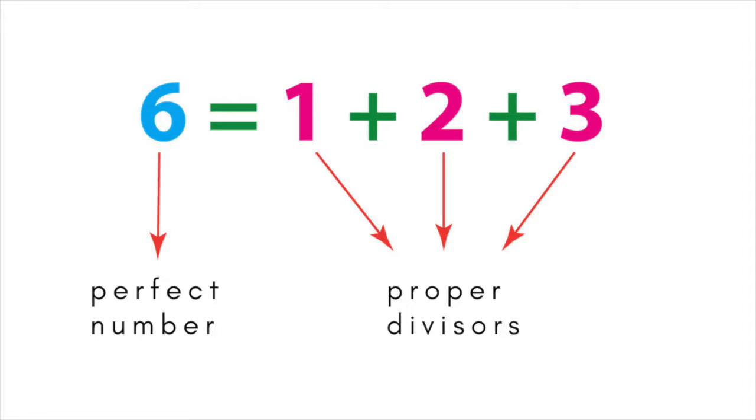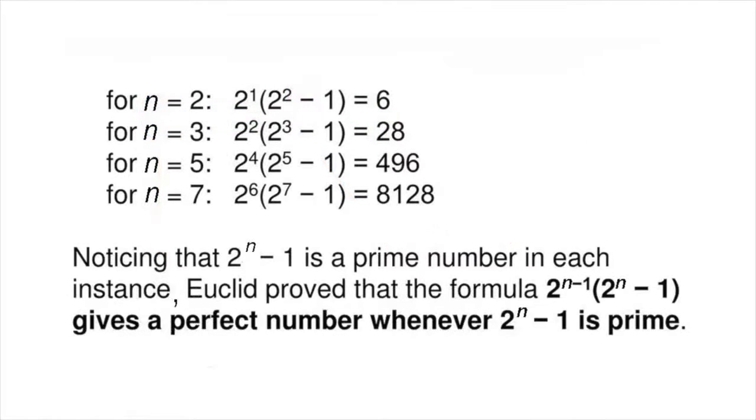In about 300 BC, Euclid proved that whenever 2 to the n minus 1 is prime, where n itself is prime, in other words, for every Mersenne prime, 2 to the n minus 1 times 2 to the n minus 1 is an even perfect number. For example, the first four perfect numbers are generated like this.